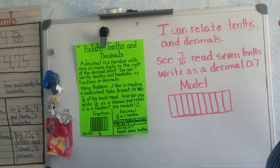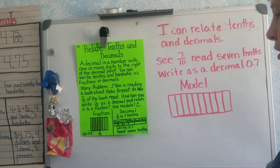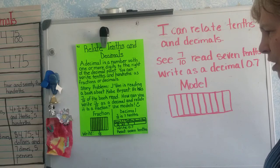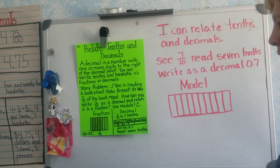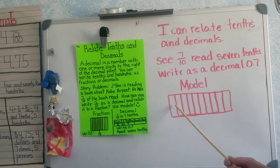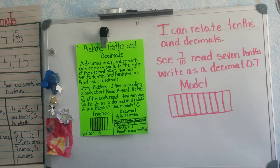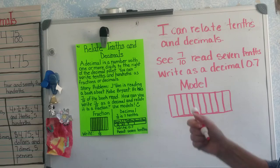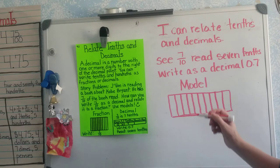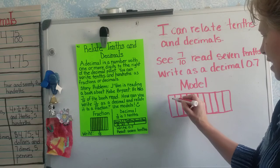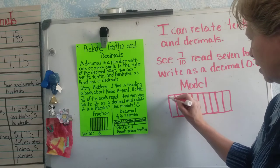We can use models. Mrs. Allen tells you about using models all the time, right? So what I did was I have ten one-tenth parts here. And what I'm going to do is — since Javon had read seven tenths of the book — I'm going to shade in seven one-tenth parts.